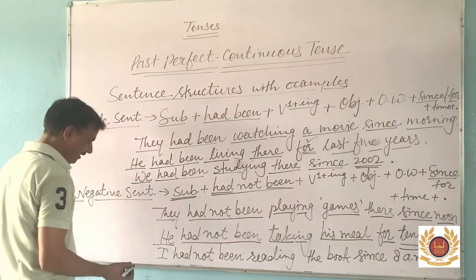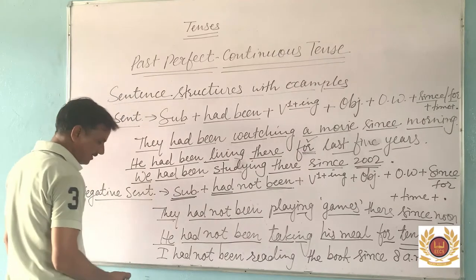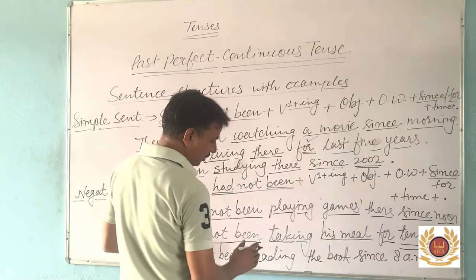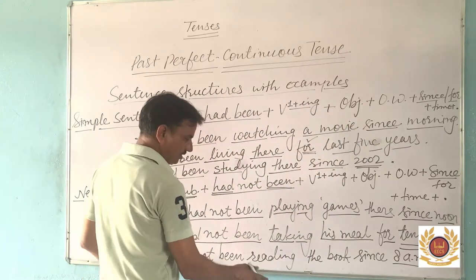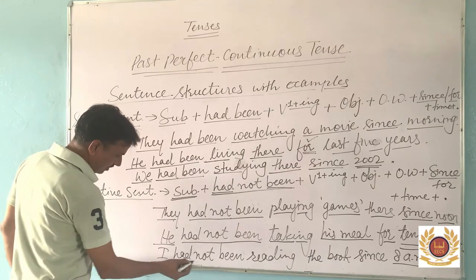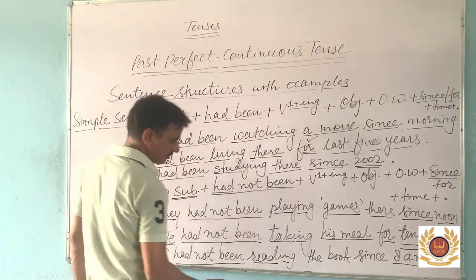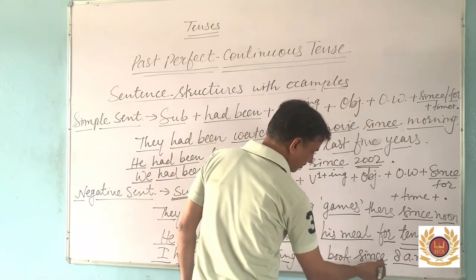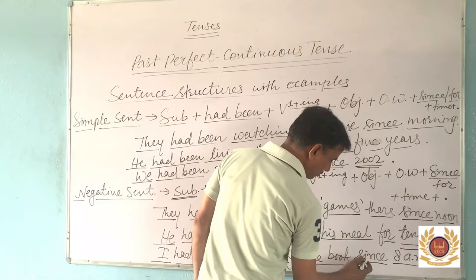Last example of the negative sentence: 'He had not been reading the book since 8 p.m.' In this sentence, the action of reading the book was not completed — it was going on with a point of time, 8 p.m., in the past. 'Had not been' is used here. 'Read' is the first form of verb with '-ing' as 'reading', 'the book' is the object. 'Since' is used because the time given is a point of time — 8 p.m.